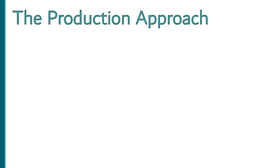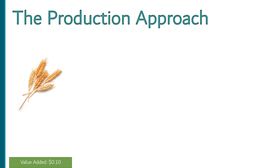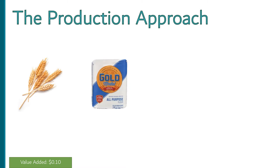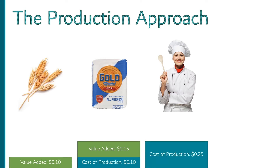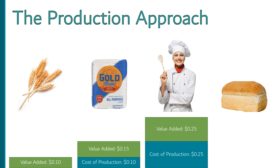First, the production approach. Let's use an example — the production of a loaf of bread. We start with the farmer growing some wheat. Let's say they grow and sell 10 cents worth of wheat to a mill. That mill buys the wheat for 10 cents but processes it into flour, adding to its value. They might sell the resulting flour for 25 cents, so their value added is 15 cents. A baker then buys the flour for 25 cents and uses it to make a loaf of bread. If they sell that bread for 50 cents, then their value added is 25 cents. At the end, we get a final loaf of bread whose market value is 50 cents. You can see that if we added up the value added at each stage of production, we would get the final market value, which is what we want for GDP.